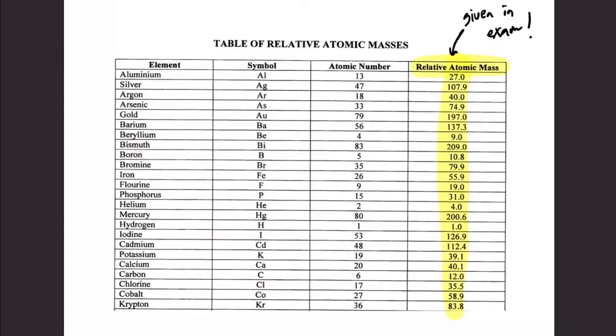But that was in school, guys. In matriculation level, you're going to be given a table of relative atomic masses consisting of element symbols, atomic numbers, and relative atomic mass of each element. This will be given during exams. Let me emphasize again: no unit.